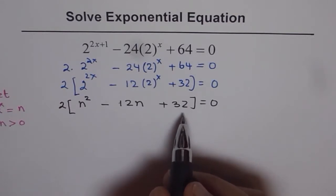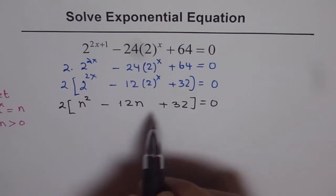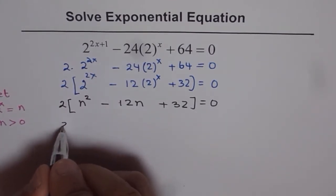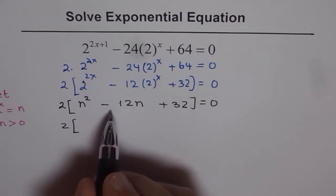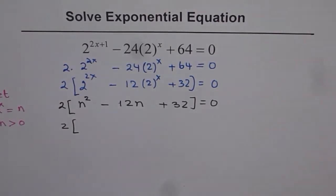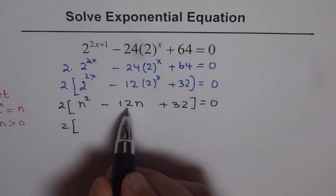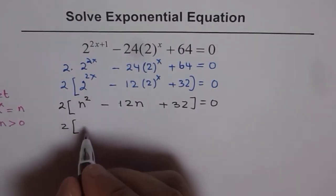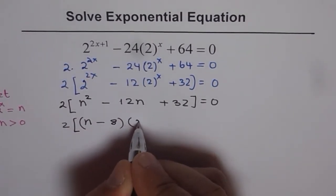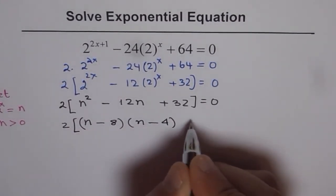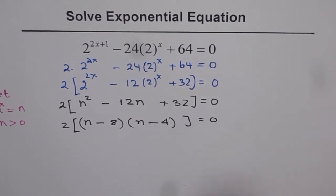We are looking for two numbers whose product is 32 and whose sum is minus 12. Two numbers will be 4 and 8. 4 and 8 are the two numbers and both will be negative because when you add them, you get minus 12 and when you multiply, you get 32. So we have n minus 8 times n minus 4 equals to 0.